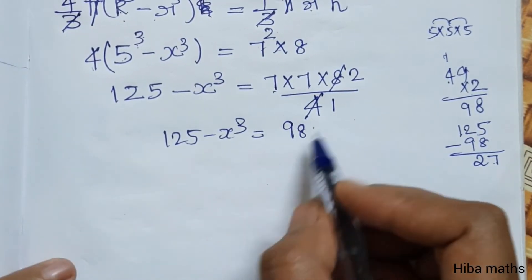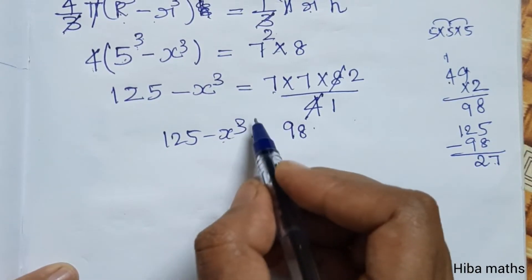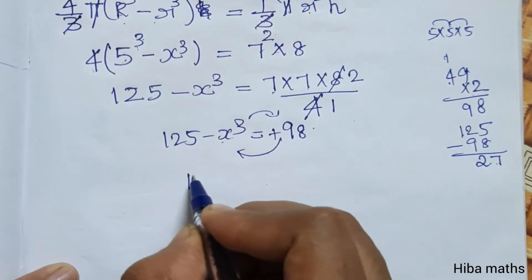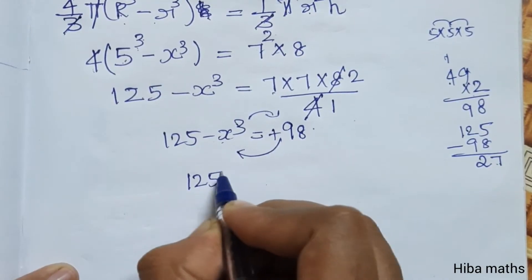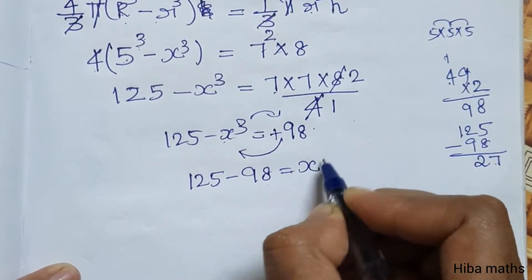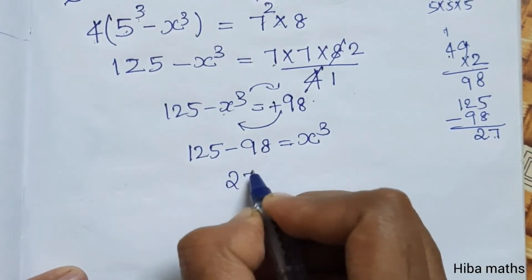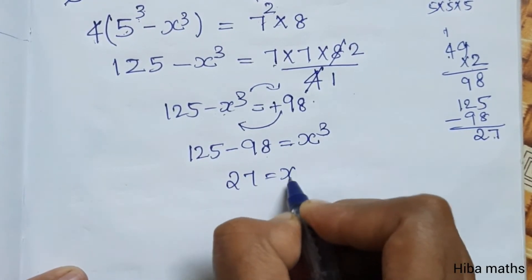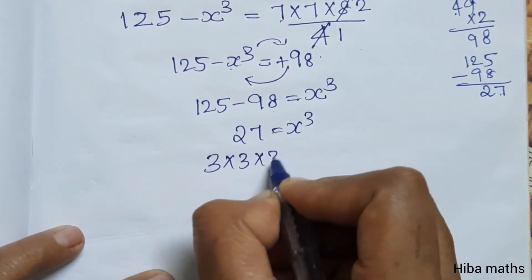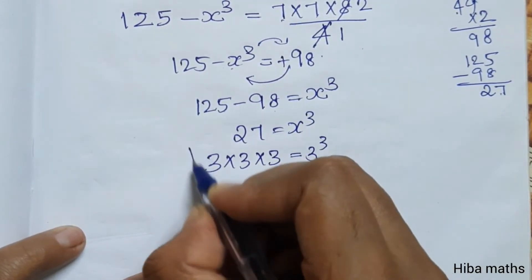Rearranging: bringing the x³ to the other side, we get 125 minus 98 equals x³. So x³ equals 27. And 27 equals 3 times 3 times 3, which is 3 cubed.